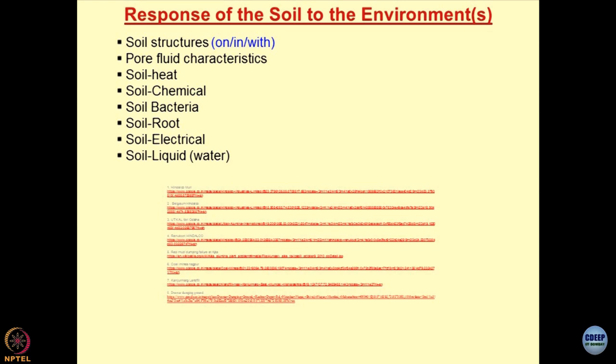Interaction of soil with heat — when soils come in contact with elevated temperatures, this could be a forging unit, a furnace foundation, a rolling forging unit in an industry where the hammer drops and produces a lot of heat, or rocket launching pads. Different types of cables buried inside soils for industrialization also generate heat. When you do ground improvement, you inject chemicals in the soils and these soils might react with the chemicals.